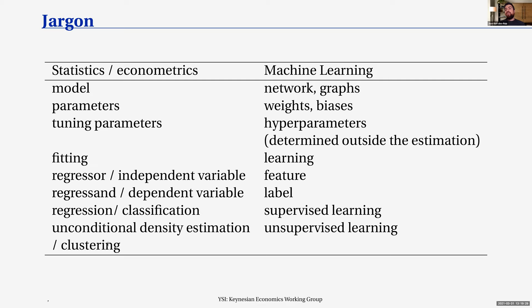Then you have unsupervised learning — unconditional density estimation, clustering, or dimensionality reduction. Unsupervised learning comes from the fact that you don't have a teacher — no label. Instead of telling the software 'this is a cat,' you just present the picture with only the features, and the computer has to estimate the density.